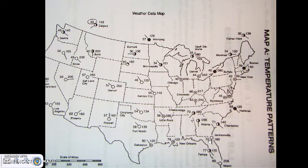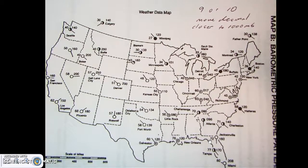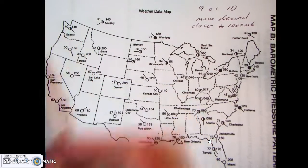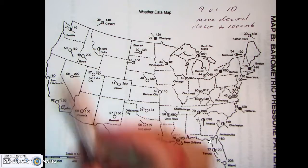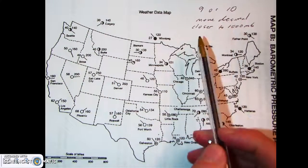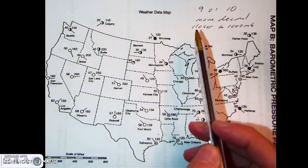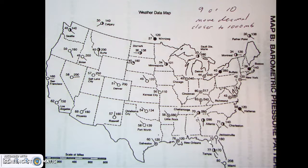We should see roughly parallel isotherm lines — that's Map A, and the questions for that are pretty simple. Then we get to Map B, the air pressure map. We've got air pressures on the right side of the station model, and this lab has been simplified greatly for school students. We talked about putting a nine or ten in front of the number and moving the decimal so it ends up close to a thousand millibars. If you're unsure whether to pick nine or ten, go with whichever brings you closer to one thousand.